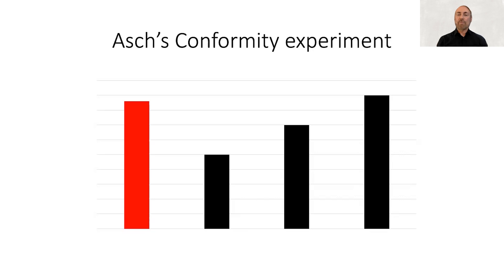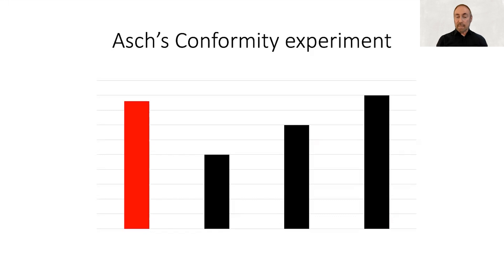In the study Asch put together, he placed people in a room with four others — but those four were actually working as part of the study, though the real participant did not know that. What would happen is these other people, when asked which line matched in length, might respond with the first line — the one that appears to be the shortest. Not only the first person, but all four of them might pick that line. From the real participant's perspective, these other people look just like other participants, so they have no reason to be suspicious that something is going on.